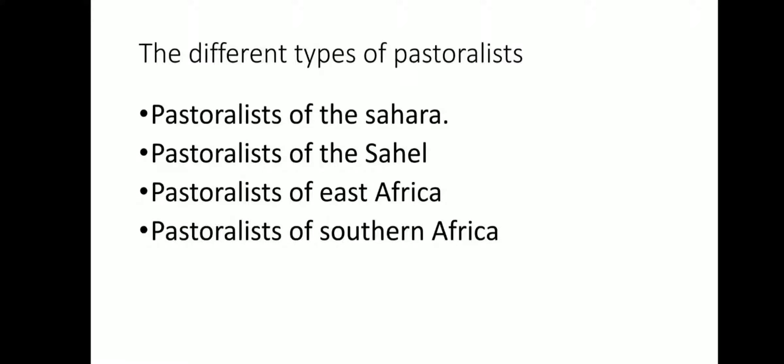We have the pastoralists of the Sahara, the pastoralists of the Sahel, the pastoralists of East Africa, and the pastoralists of Southern Africa. As we learned in the previous lesson, the first forms of pastoralism were noted in the Sahara, later in the Sahel, and later in East Africa. Then in Southern Africa, some tribes and ethnic groups opted for this lifestyle. We are not saying that the Southern African pastoralists are descendants of the Saharan pastoralists. We are saying that they, for some reason, realized that pastoralism was the best form of life for them.